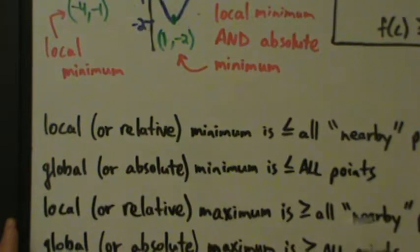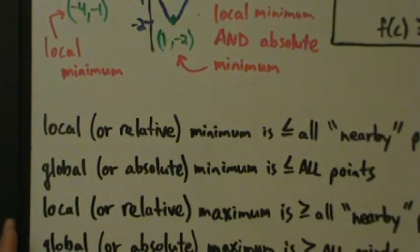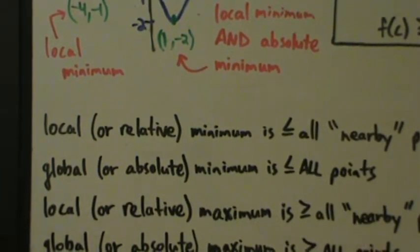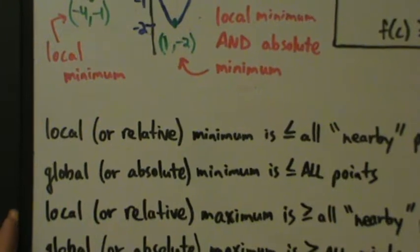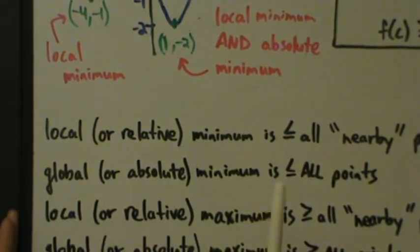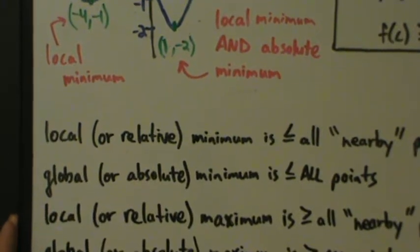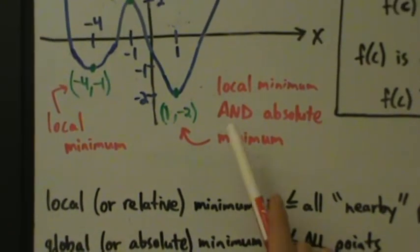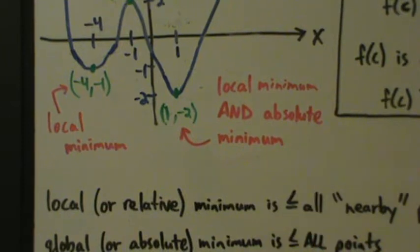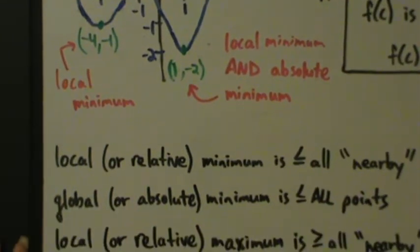A global or an absolute minimum is less than or equal to all the points on the entire function. Global and absolute are completely interchangeable — they mean exactly the same thing. You could say global min or absolute min, it's exactly the same thing. Personally, I prefer local and absolute, but local, relative — same thing; global, absolute — same thing.